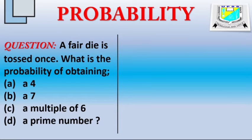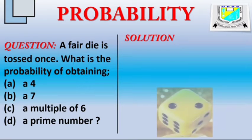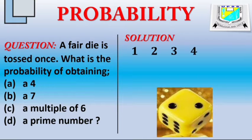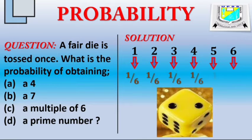First of all, we must realize that this question is a theoretical probability question because we are not relying on the results of previous events. Now, let's talk about a fair die. The fair die is a cube. It has a number engraved on each of its sides, and because it has six equal sides, it has numbers 1, 2, 3, 4, 5, 6.